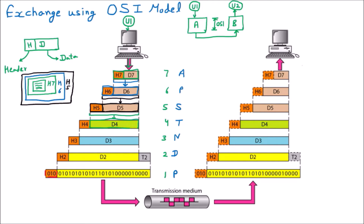The transport layer is going to add header H4 - H4 means the header of the transport layer. Again, one more envelope is applied. This complete data is then forwarded to the next layer.